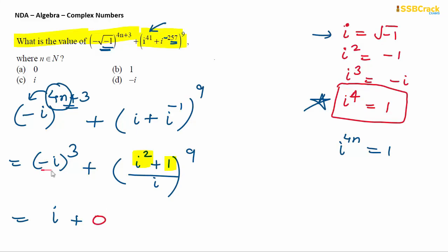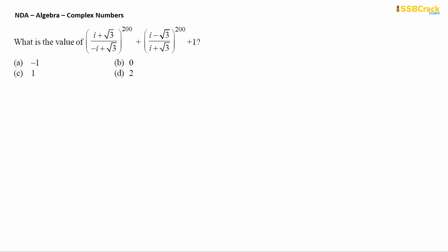Plus here i square's value is minus 1, so minus 1 and this plus 1 cancel. What remains is zero. So you have to notice that this value of i minus i cube, which is plus i, is the answer we are getting because the later term's value became zero. Hence the answer for this question is option C.